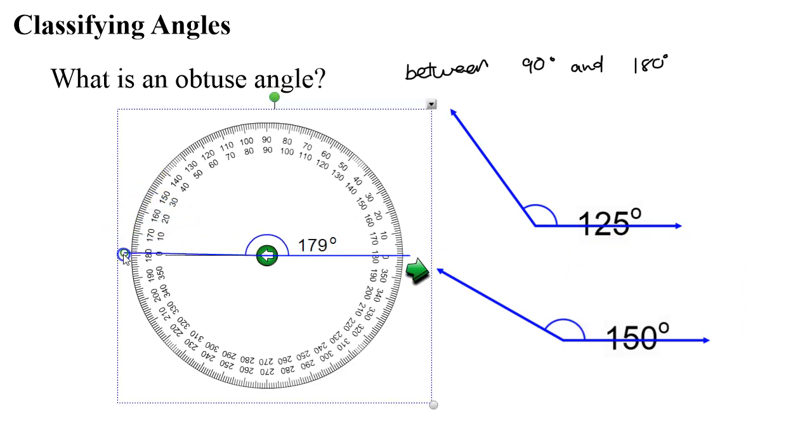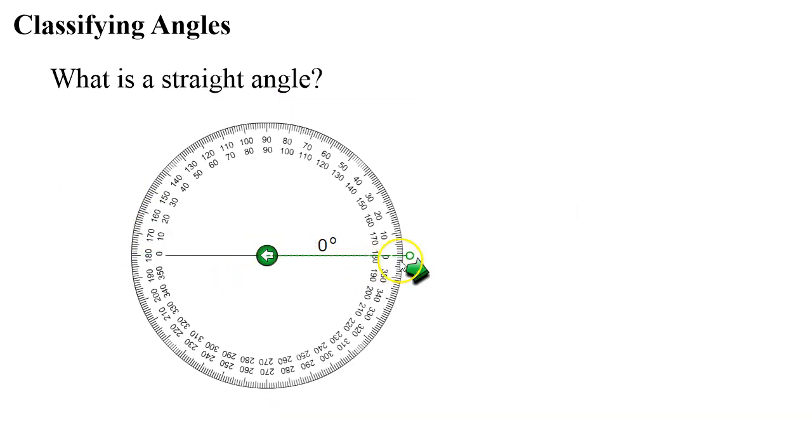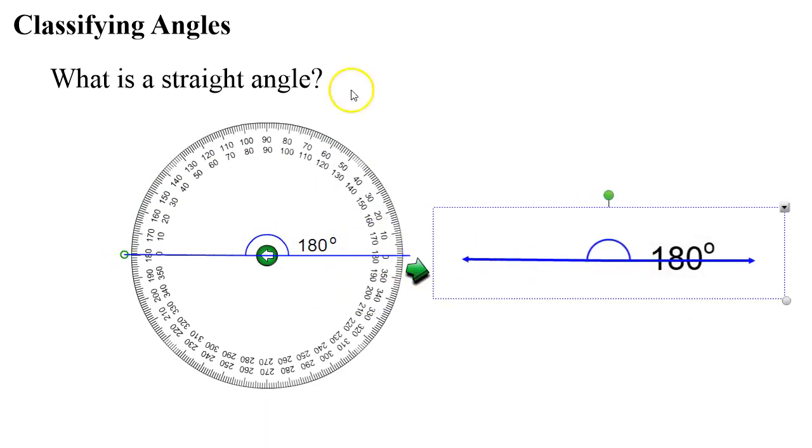So what happens when we get all the way to 180? That brings us to our next angle called a straight angle. A straight angle is exactly 180 degrees. The reason we call it a straight angle is quite obvious. It's because it makes a straight line.